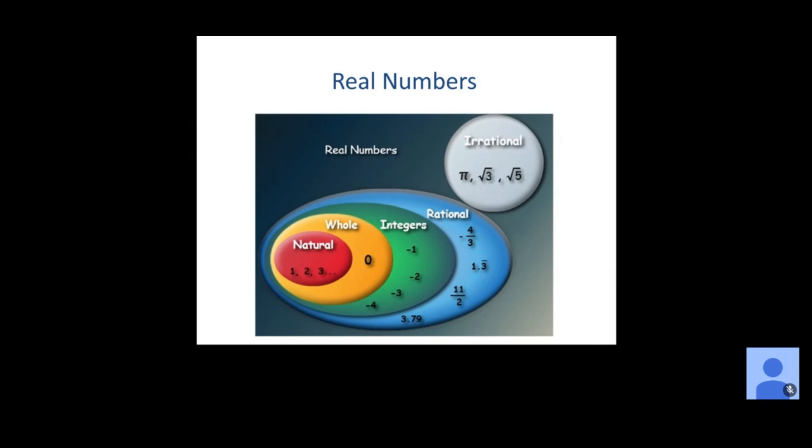Within the rational numbers we have what's called the integers — your counting numbers and their opposites: negative 5, negative 4, negative 3, negative 2, 0, 1, 2, 3, 4, 5. Those are all integers.